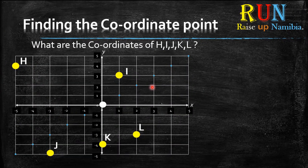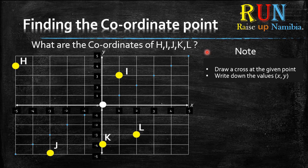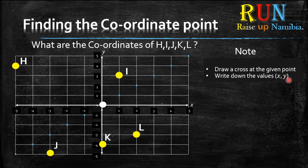So here we have a question: what are the coordinates of H, I, J, K, and L? To solve such a question, we use this note here. The note says: draw a cross at the given point, and then write down the values of x and y in order — x first, then a comma, then the y value. There are a lot of ways to solve such questions, but this is an easy way I decided to show you.